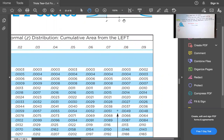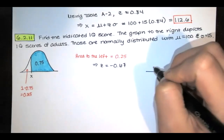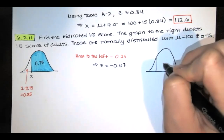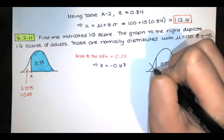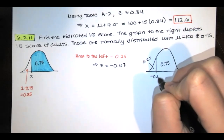So again, what that's saying is that the z-score that separates that top 75% from that bottom 25% is z equals negative 0.67.